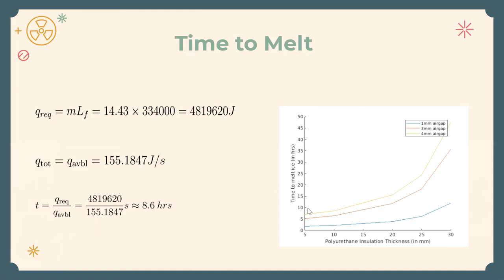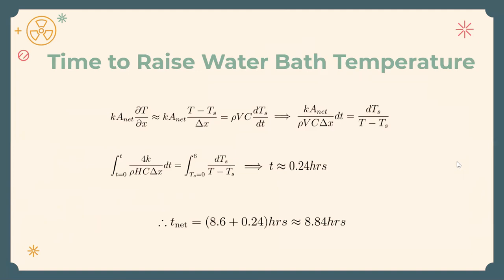Then we write a differential energy balance to calculate the time that it takes for the water bath temperature to rise from 0 to 6 degrees Celsius. Remember the two-degree cushioning. We ignore the transient convection terms, and on integrating we obtain 0.24 hours. Therefore, the total time for which the vaccines can remain potent is about 8.84 hours.